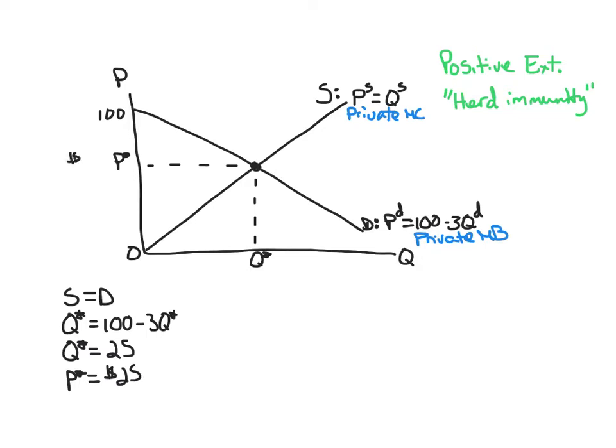And P star ends up being a nice symmetric 25 as well. So the vaccines cost $25 each. And there's 25 of them or 25,000 if you want to be a little more realistic about the market size.